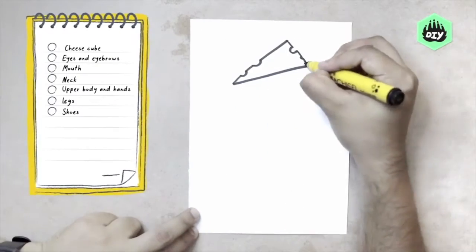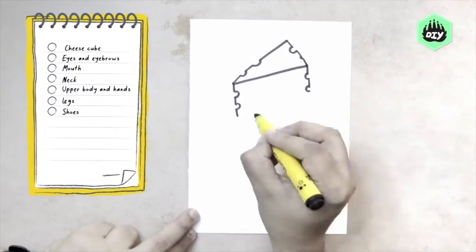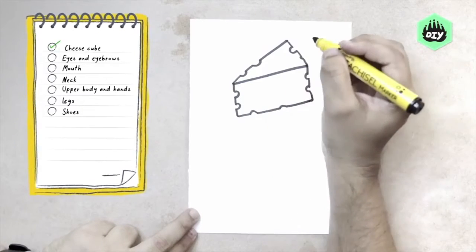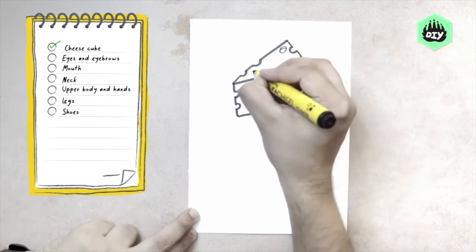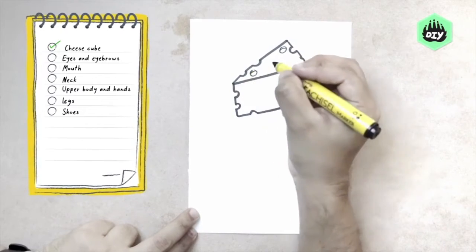Let's see how do we make a three-dimensional cheese cube or a cheese block. That's the outline which is done. A cheese block usually has a lot of holes in it. Once we've made a few holes...